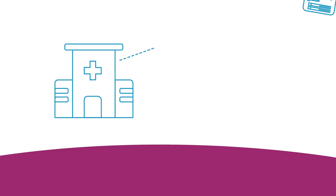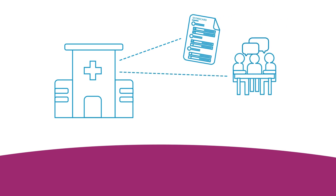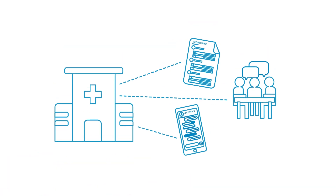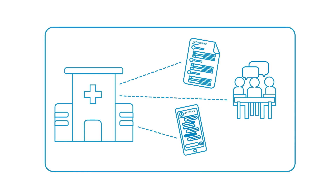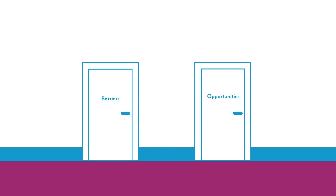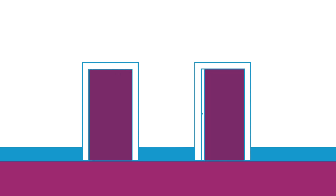For example, project staff working on social accountability in the health sector may know what the formal and informal accountability processes are, who is involved in them and how they generally work. APEA can help them analyze why those processes function or don't function as intended. It can also help show the barriers and opportunities that make those processes more or less effective. When project staff understand the answers to these why questions, programming can be more effective.